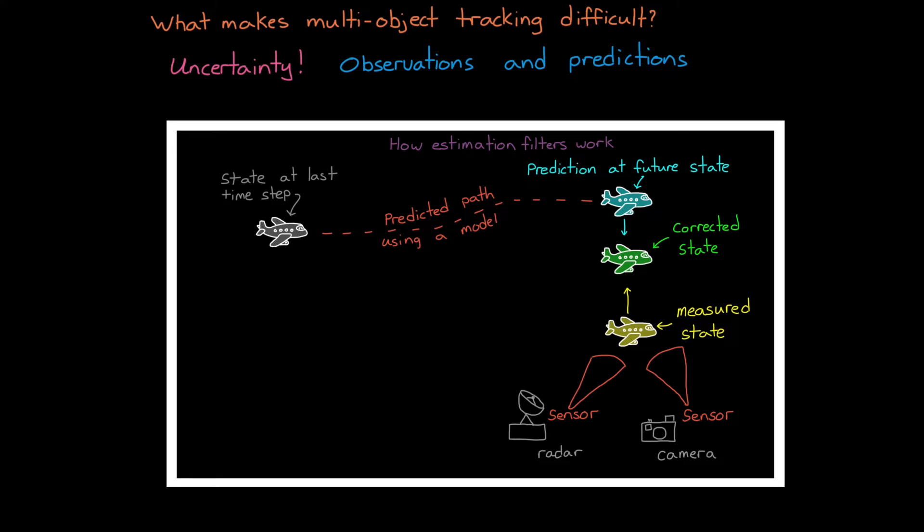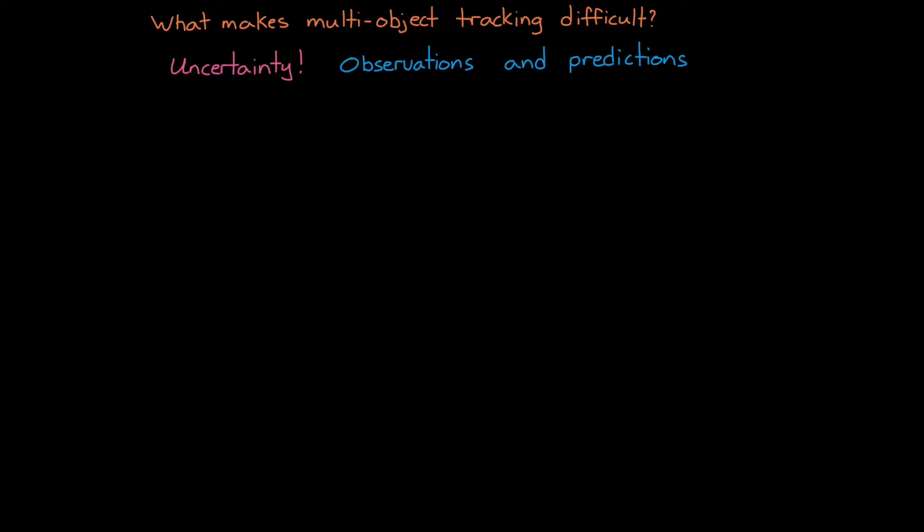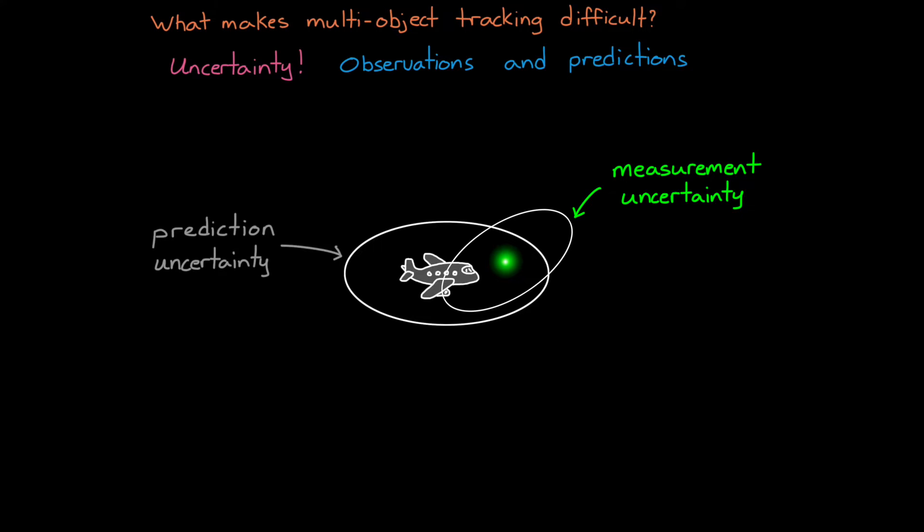All of the problems we're going to have stem from our uncertainty. This is uncertainty in the observations, or detections of the objects, and uncertainty in our predictions of the paths that the objects are taking. Remember from the last video that an estimation filter, like a Kalman filter, works by blending an uncertain measurement with an uncertain prediction. And we looked at tracking an airplane with a radar station. We predicted where the airplane would be in the future, and then we corrected it with a noisy radar measurement.